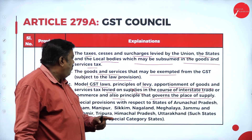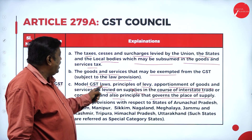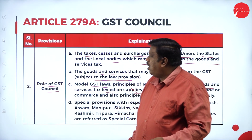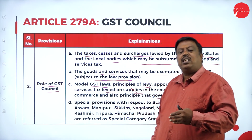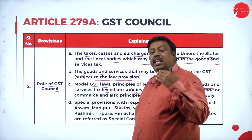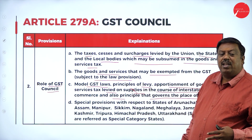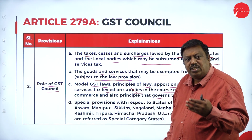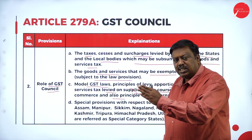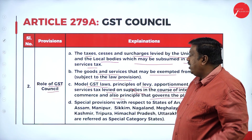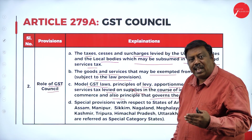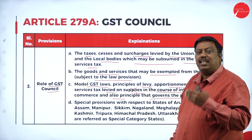The model of GST law covers CGST and SGST when goods are moving within a state — called intra-state — and IGST when goods move outside the state — called inter-state. Based on that, the council decides whether to levy CGST and SGST, CGST and UTGST, or IGST, and determines what constitutes supplies and on what basis the place of supply determines the tax.